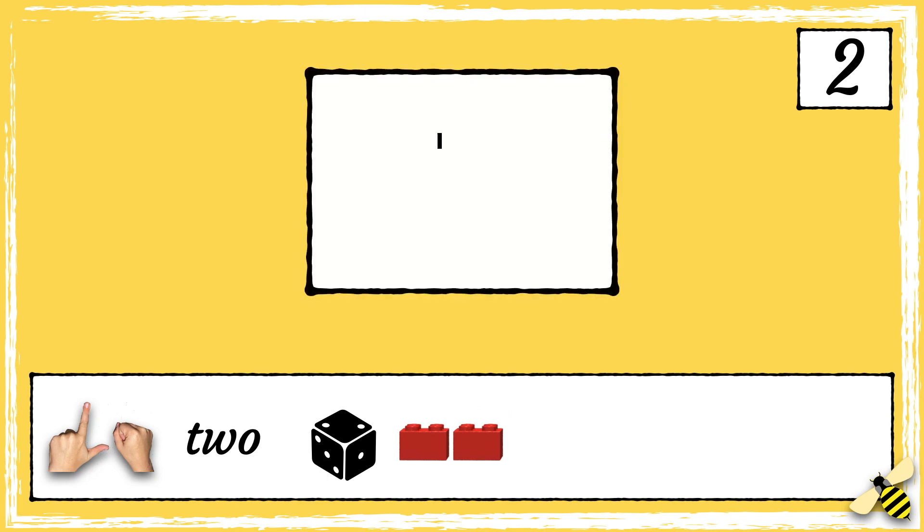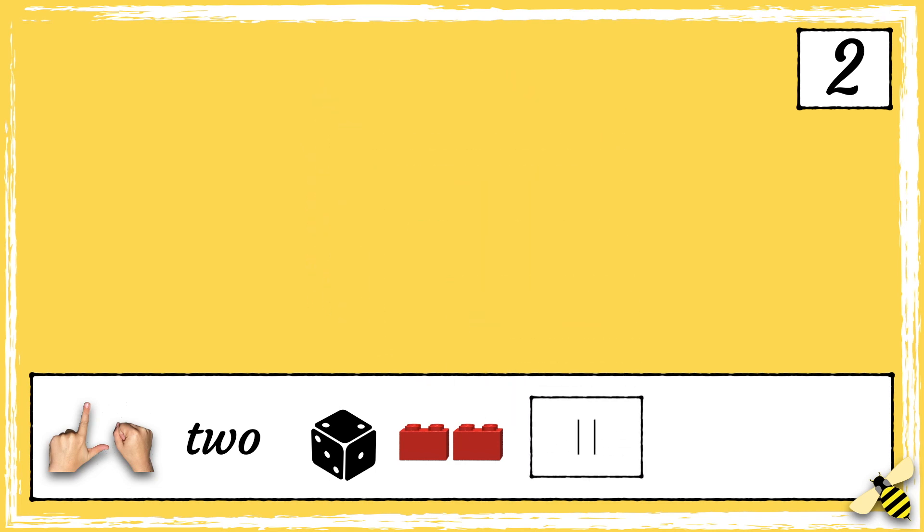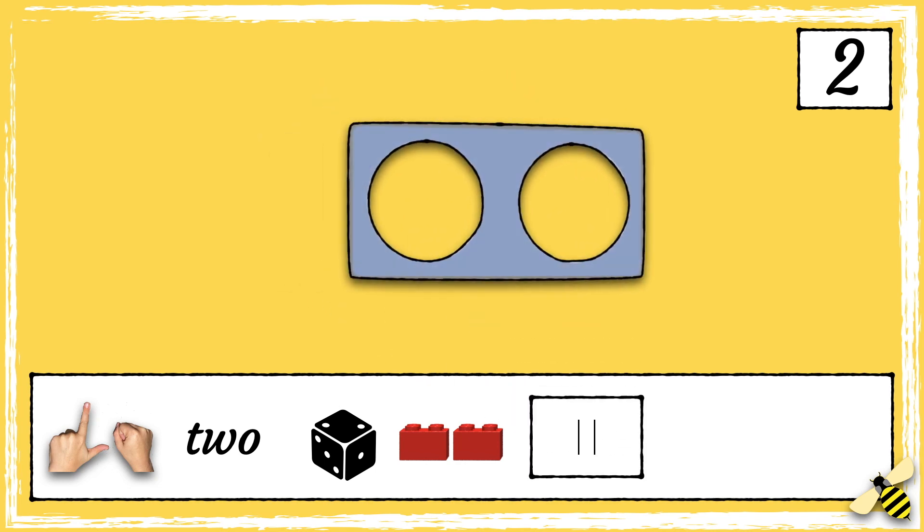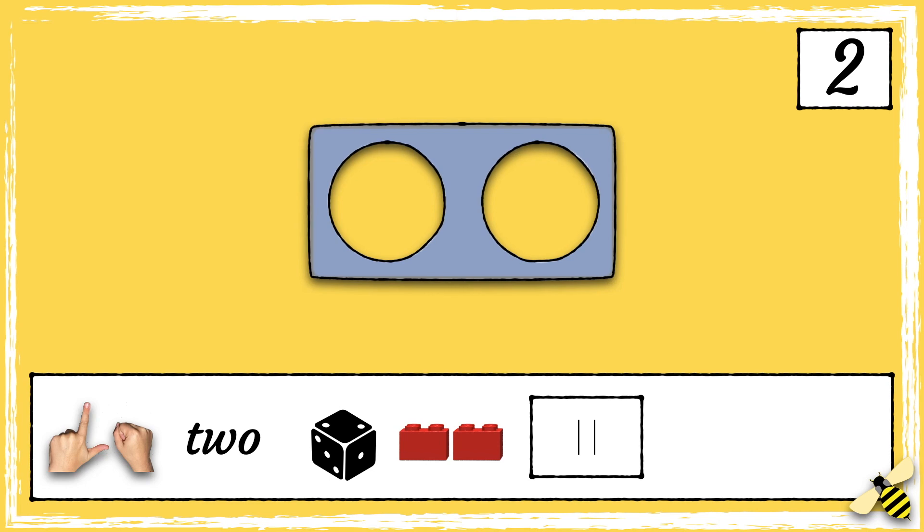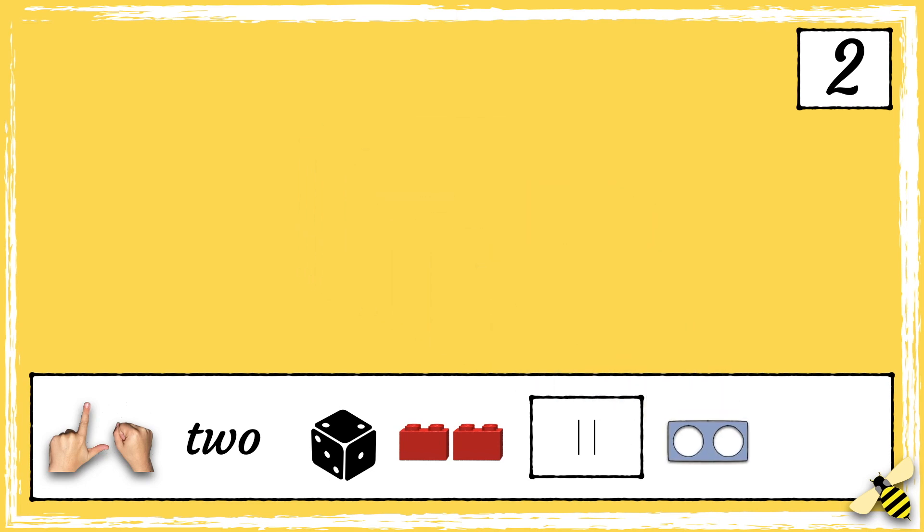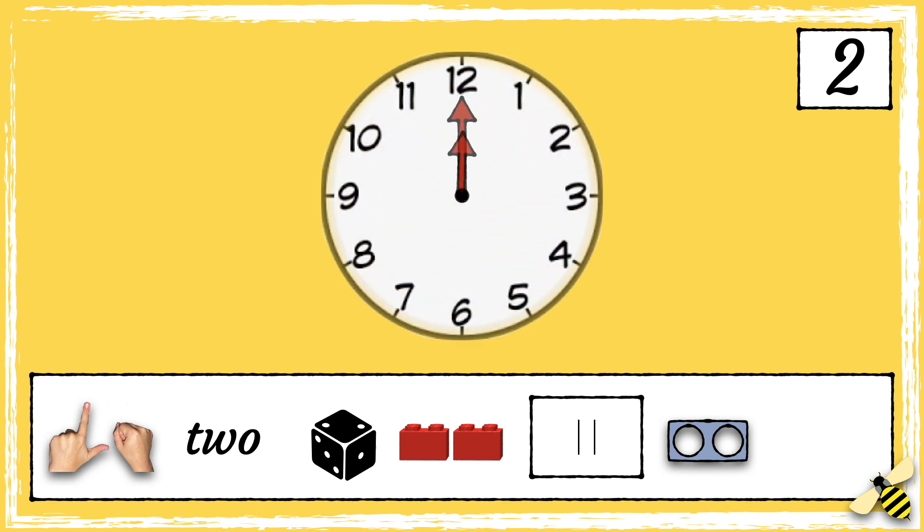Here are 2 notches on the tally chart. Here is the numicon piece that shows 2. Here is 2 o'clock.